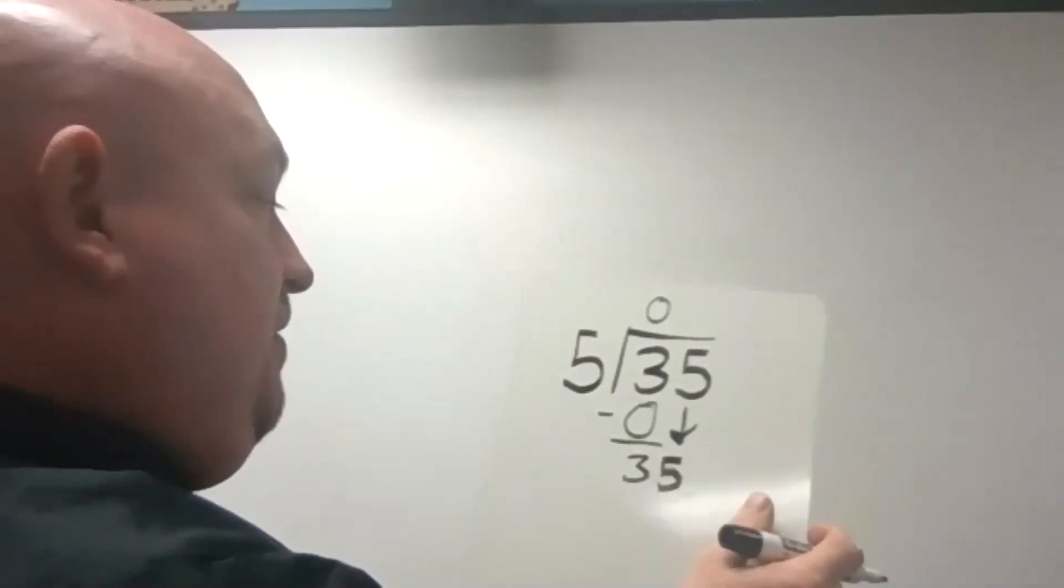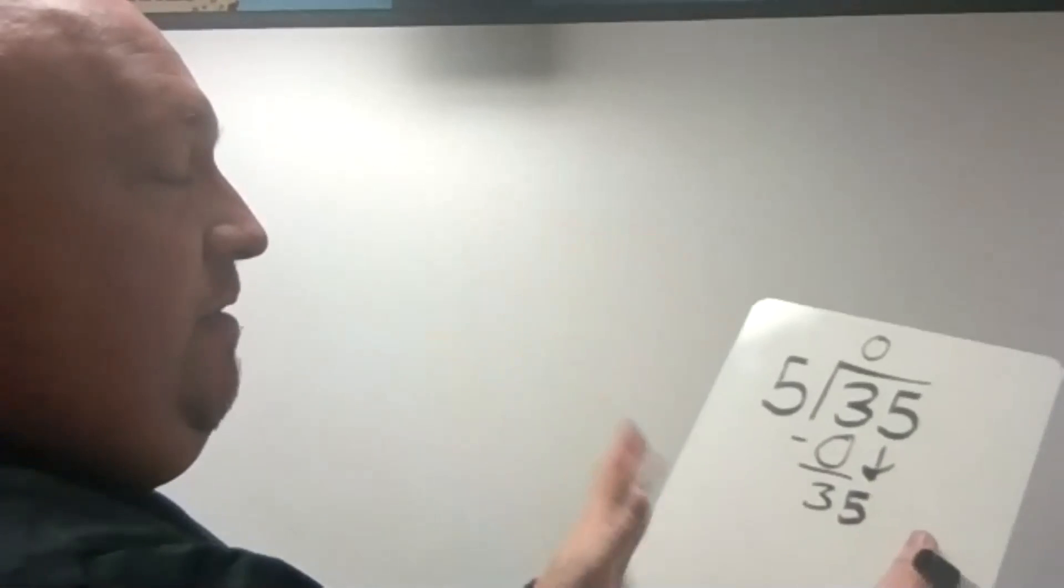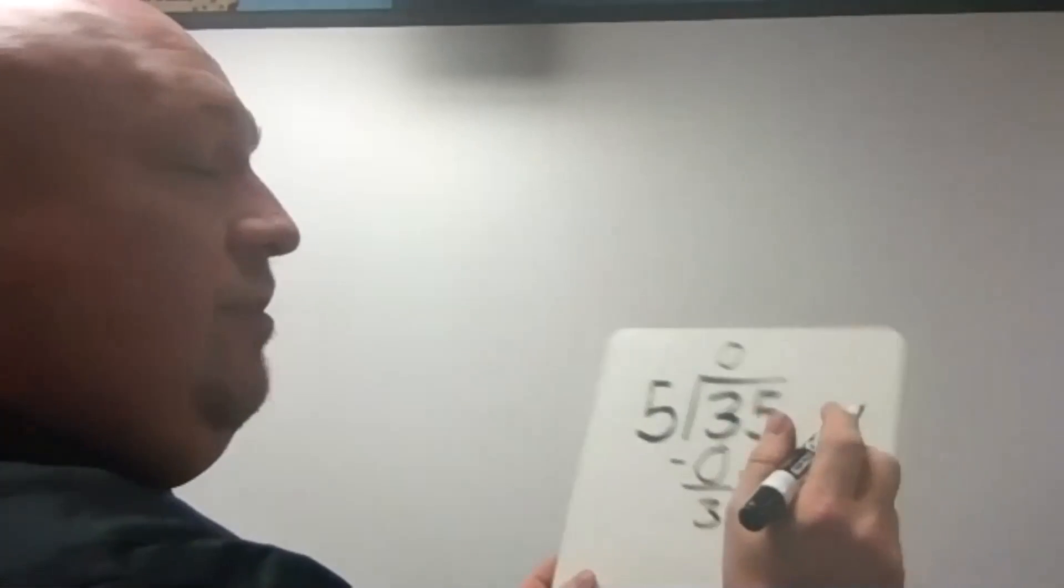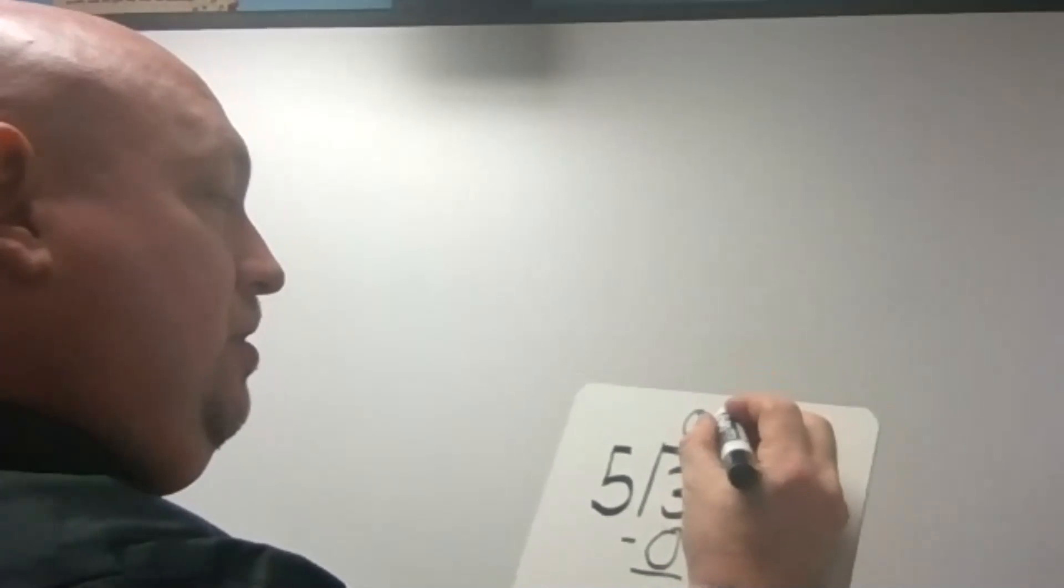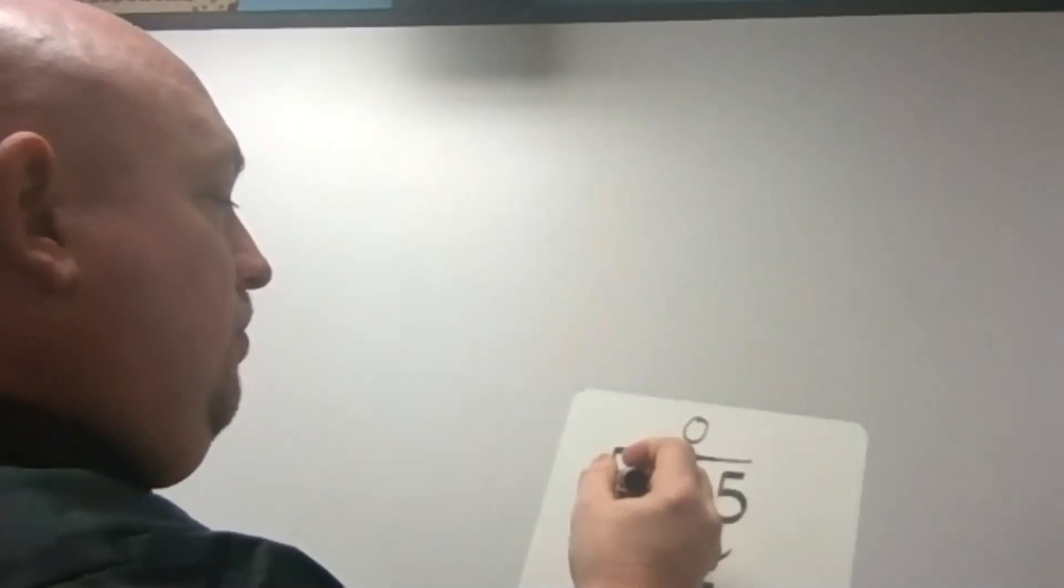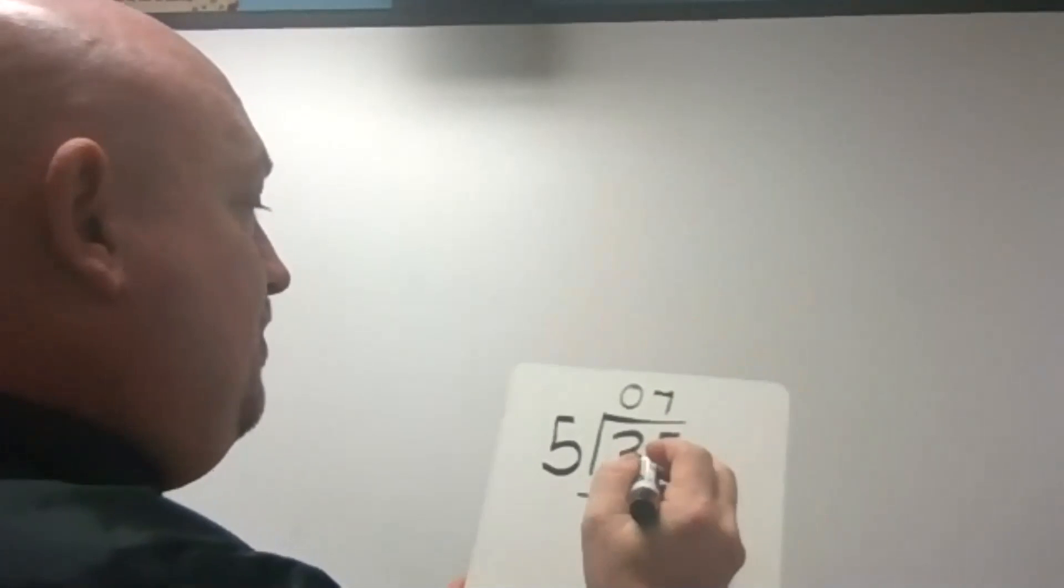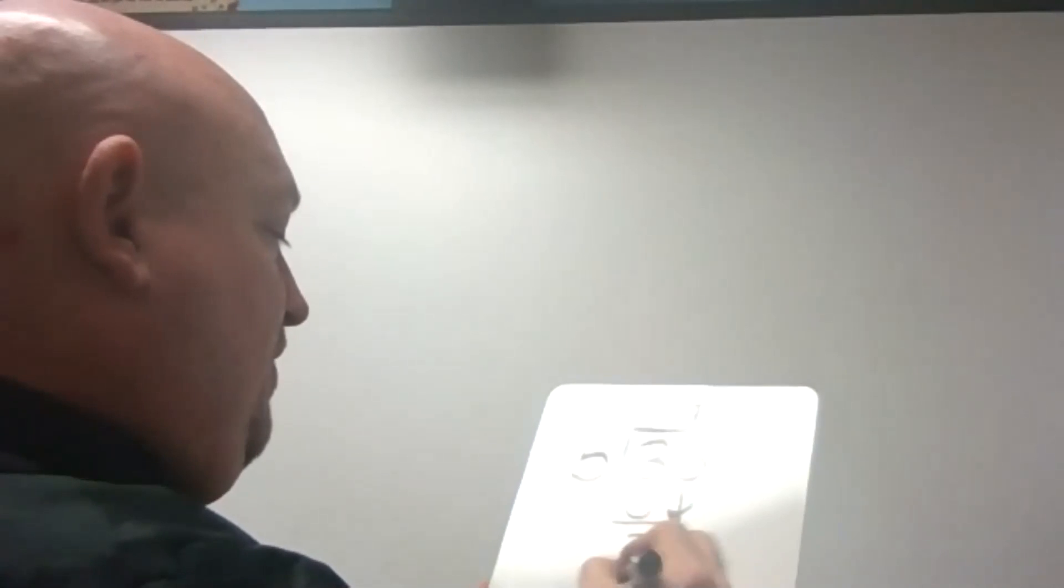So now I can bring down at 35. Now, how many times will 5 go into 35? 5, 10, 15, 20, 25, 30, 35. 7 times. And if you check your multiplication chart, you could go where in the row with 5 and go over until you get 35, and you would go up and see the 7.